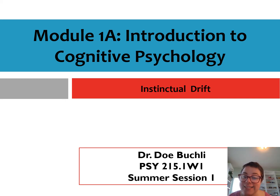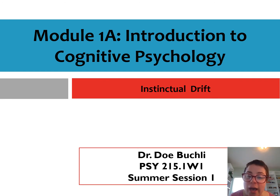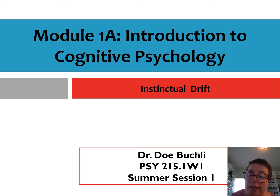This is the next in our series of videos that attempt to review and supplement the content of module one, or chapter one, in your textbook, which provides an introduction to cognitive psychology. In this particular video, I'm going to continue talking about the decline of behaviorism and its importance in the development of cognitive psychology, and we're going to talk about something called instinctual drift and why that was a problem for strict behaviorist accounts.